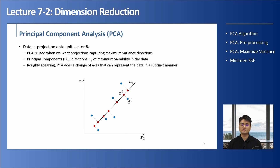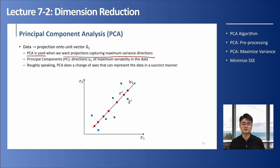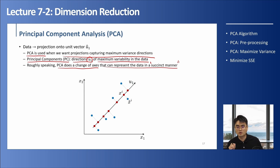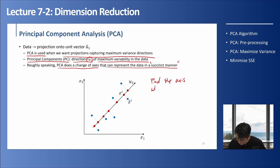That's how we can do dimensionality reduction using principal component analysis. PCA is used when we want projections capturing the maximum variance directions - the directions containing the largest information. The principal components are directions like U1 with the maximum variability in the data. Roughly speaking, PCA does a change of axis that can represent the data in a succinct manner, giving us a lower dimensional or simpler representation of our original data. The key is finding the axis where the spread of the data is maximum.